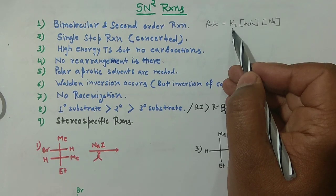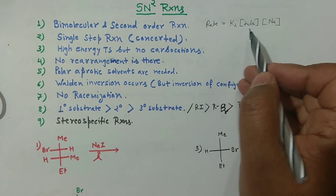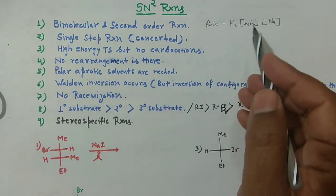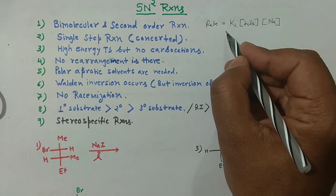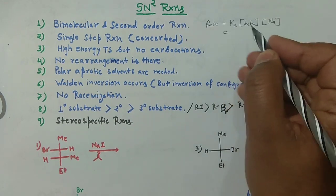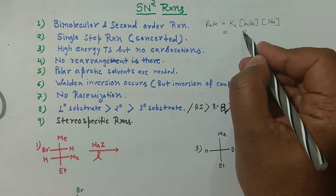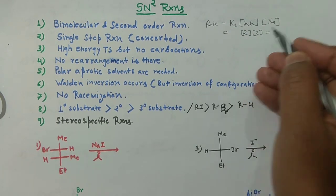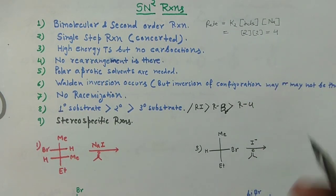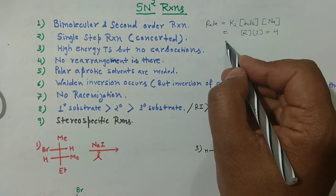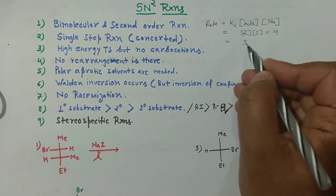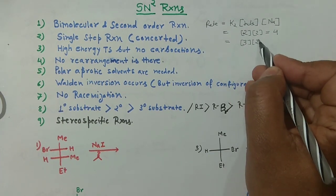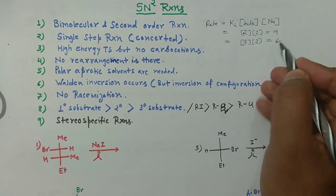Bimolecular means two molecules are involved in the rate-determining step. If you double the concentration of the substrate and also double the concentration of the nucleophile, the rate becomes four times. Similarly, tripling the substrate concentration and doubling the nucleophile concentration makes the rate six times, and so on.